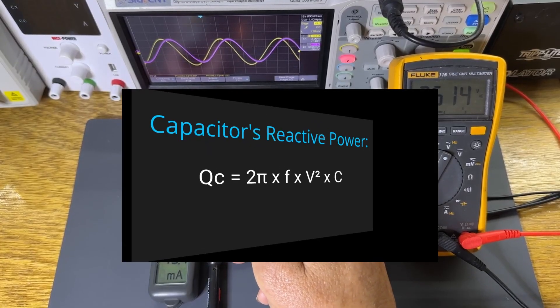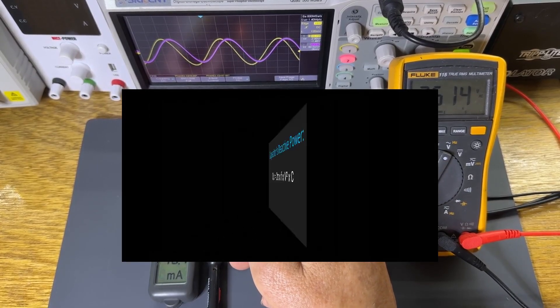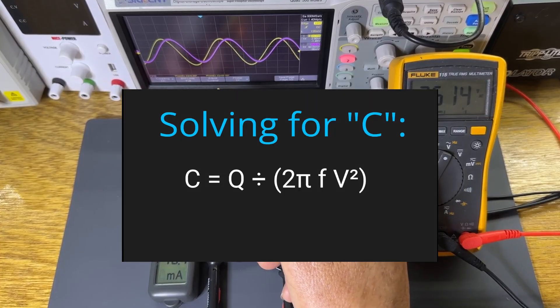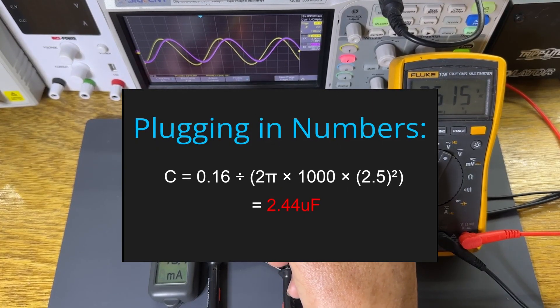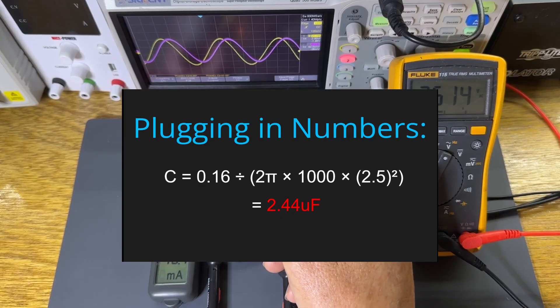A capacitor's reactive power is this. Rearranging, we get this. Plugging in our known values, we get 2.44 microfarads, which we'll round off to 2.5 microfarads for our demo.